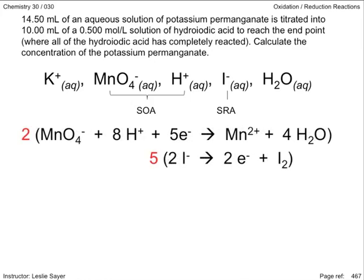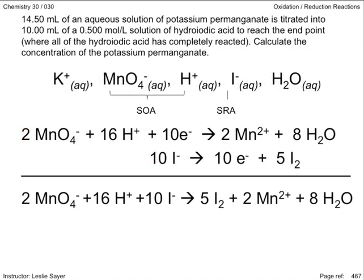Balance the electrons lost with the electrons gained by applying coefficients to the half reactions, then add the equations eliminating redundancies appearing on both sides of the equation. This is the net ionic equation.